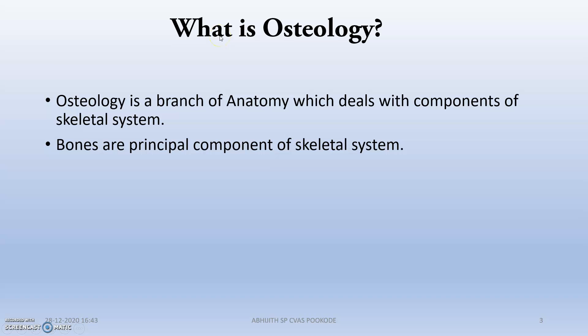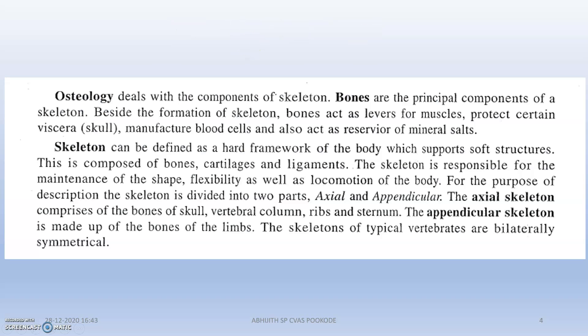What is osteology? Osteology is the branch of anatomy which deals with the components of the skeletal system. 'Osteo' means bone-forming and 'logi' means to study. So it is the branch through which we study the bone and its associated structures. Bones are the principal components of the skeletal system, and osteology deals with the components of the skeleton.